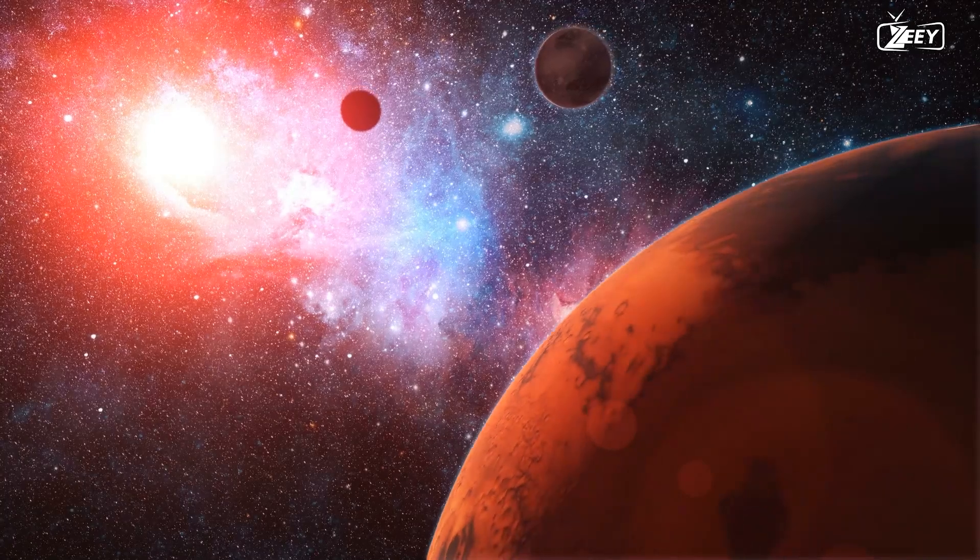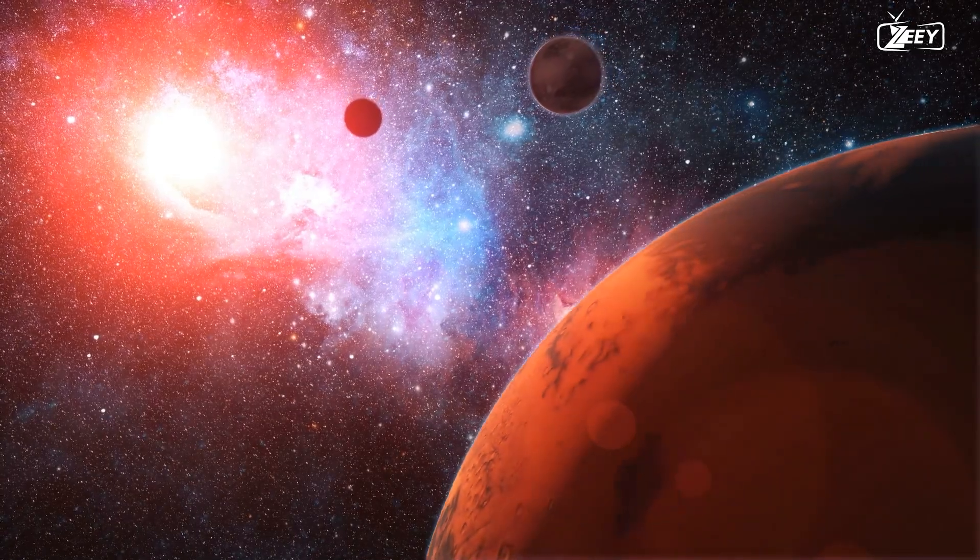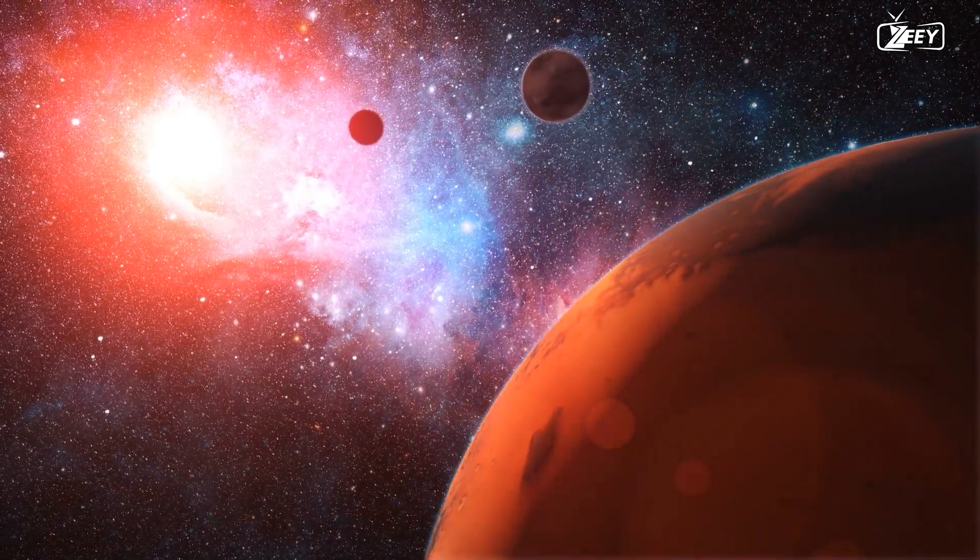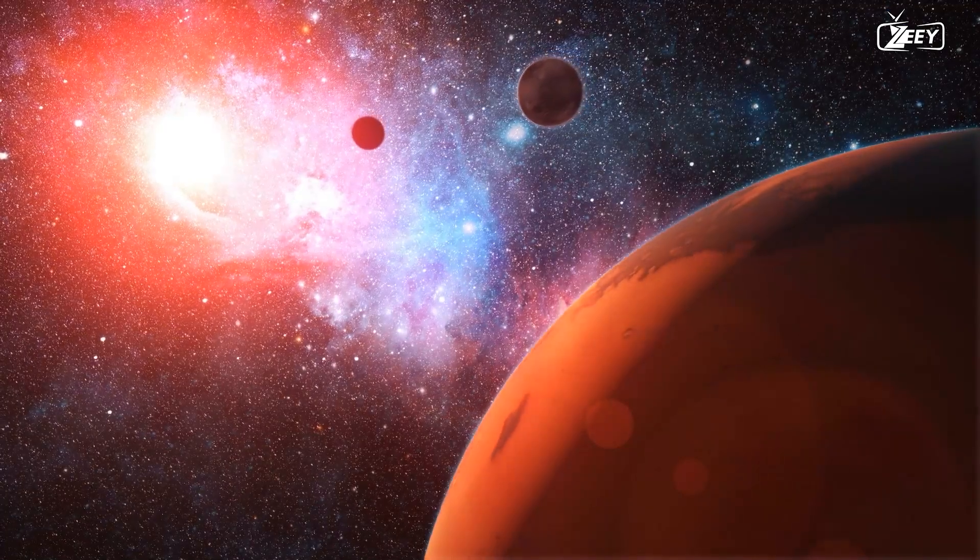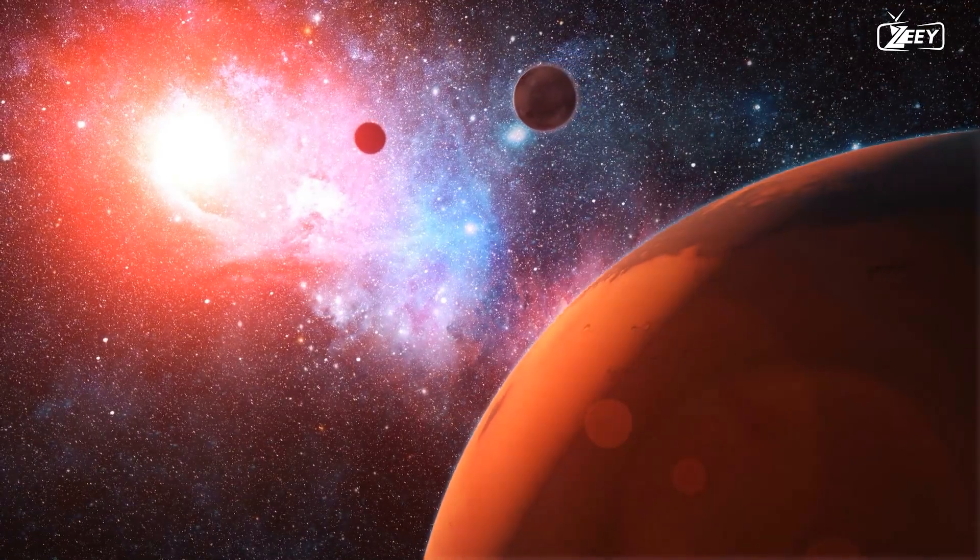How do scientists first discover an exoplanet? Although there are many different methods, direct imaging, radial velocity, and transit method are the most used.